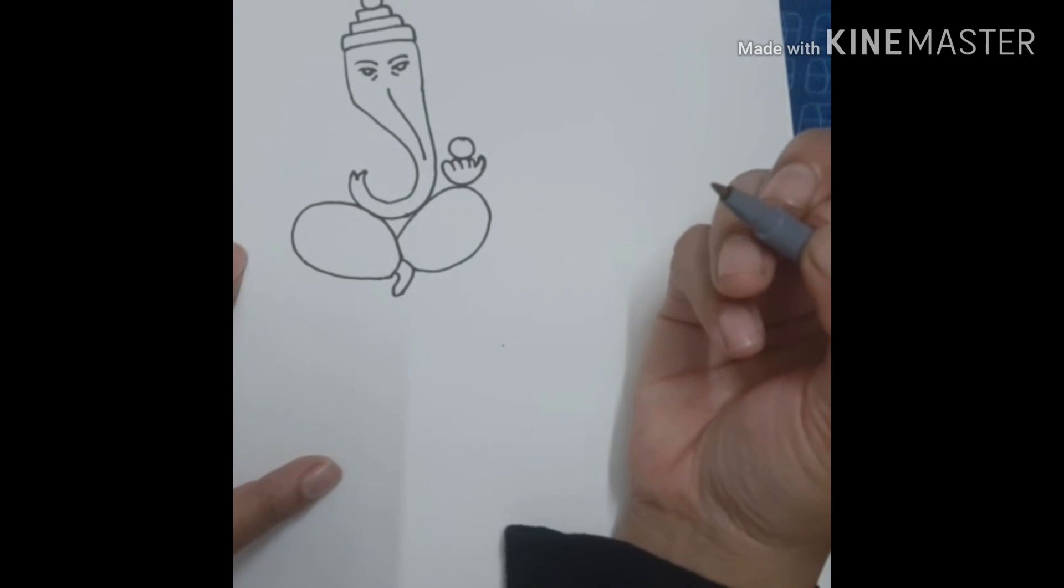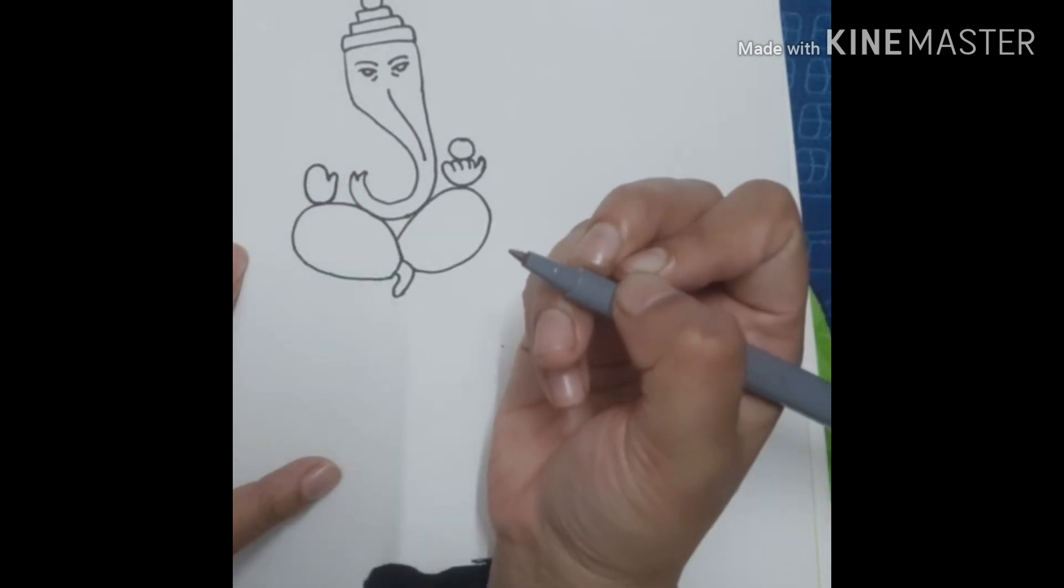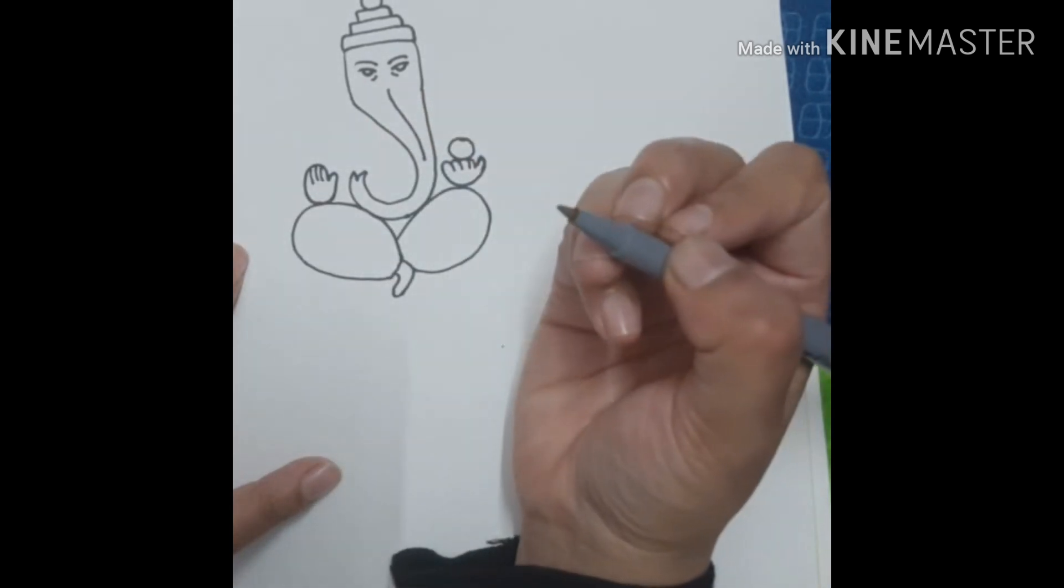In this hand, we will draw a small circle. This hand is in blessing position. So for this, you will have to make a small oval, but do not complete it. You should also make the thumb. To define the fingers, you will add small lines.